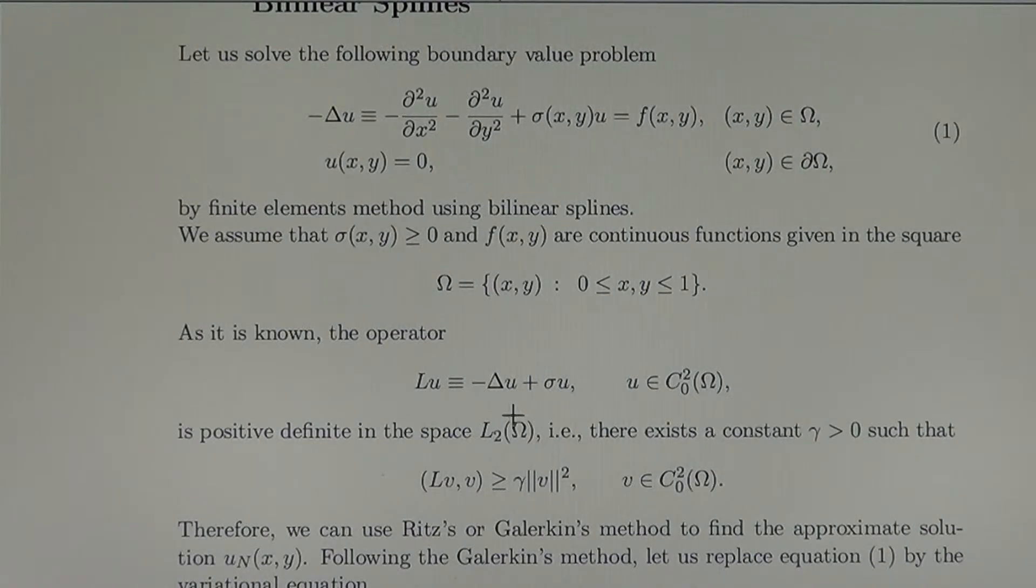As it is known, the operator L minus Laplacian plus sigma u is positive definite in the space L2 on omega of all functions integrable with squares. That is, there exists a positive constant gamma such that the product Lv times v is greater or equal to gamma times the norm of v for all functions v in C02 on omega.